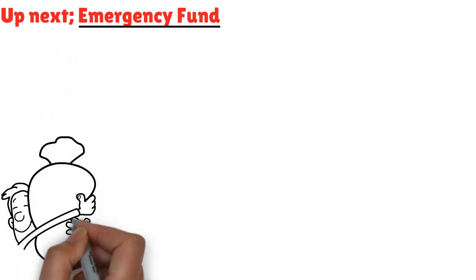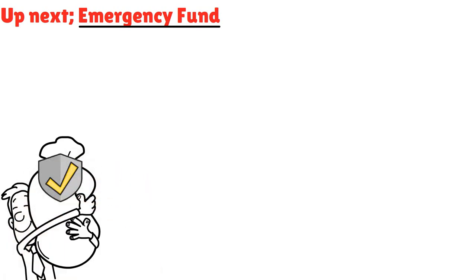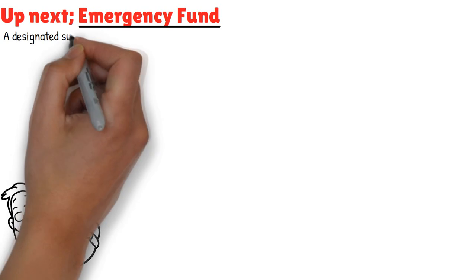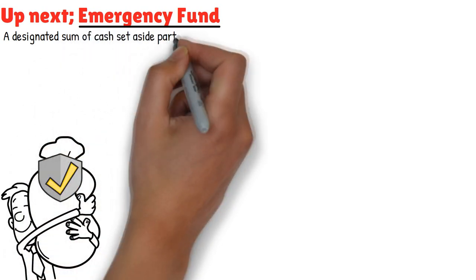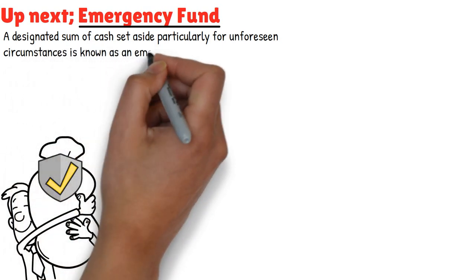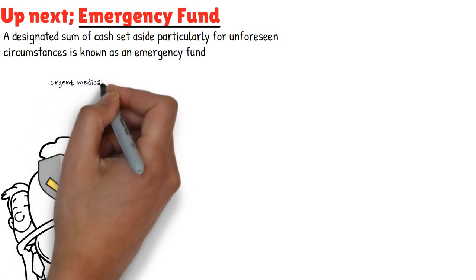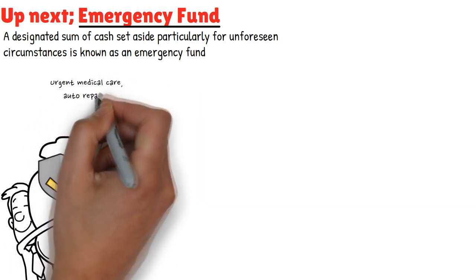Now let's talk about the importance of building an emergency fund. Having a financial safety net can provide peace of mind and shield us from money problems, because life is full of unanticipated turns and twists. A designated sum of cash set aside particularly for unforeseen circumstances is known as an emergency fund. It serves as a layer of protection to pay for unexpected costs like urgent medical care, auto repairs, or lost income.